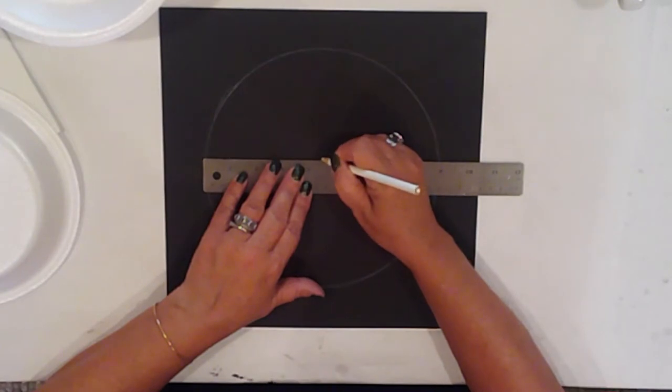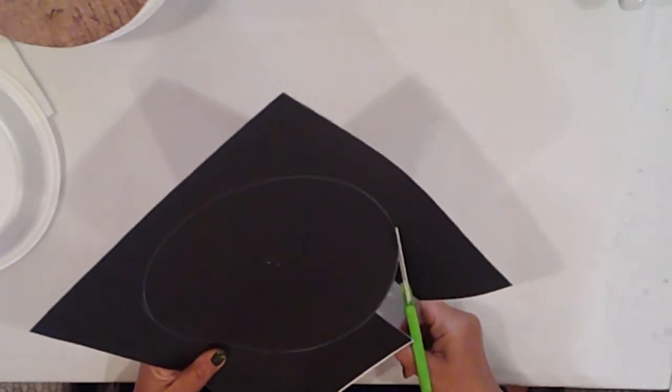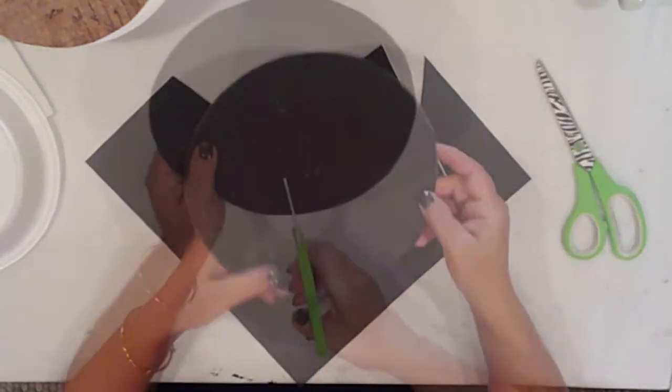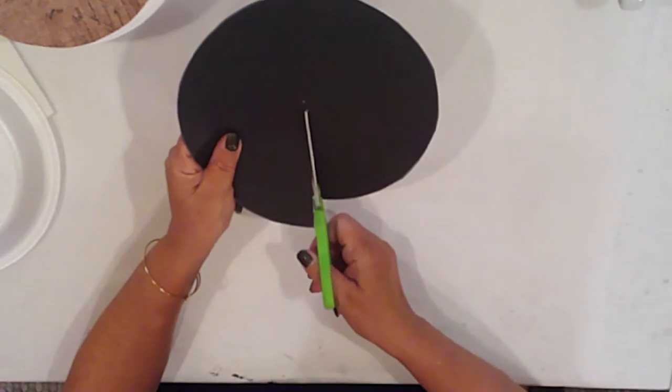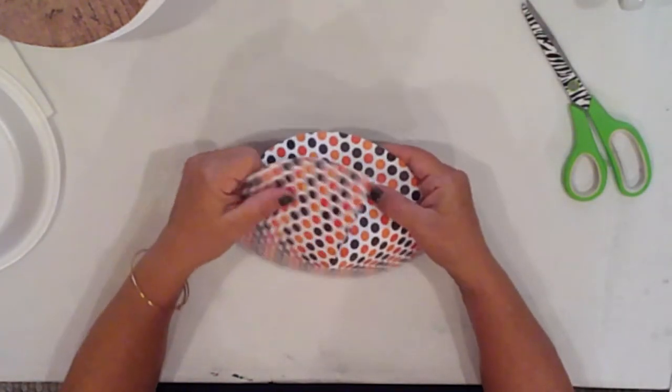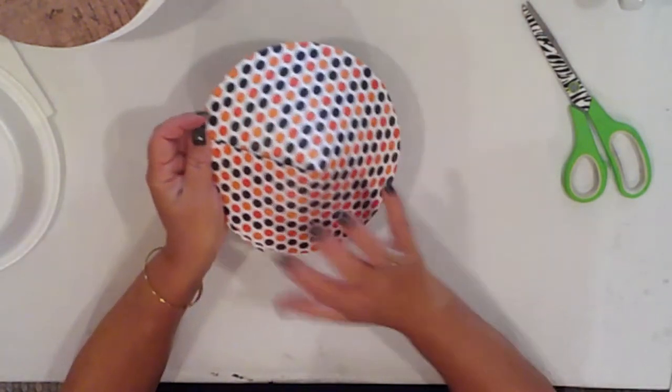I'll mark the center of the circle and I'll cut it out. Then I cut a straight line from the edge of the paper to the center so that I'll be able to make a cone shape. See? Just like this.